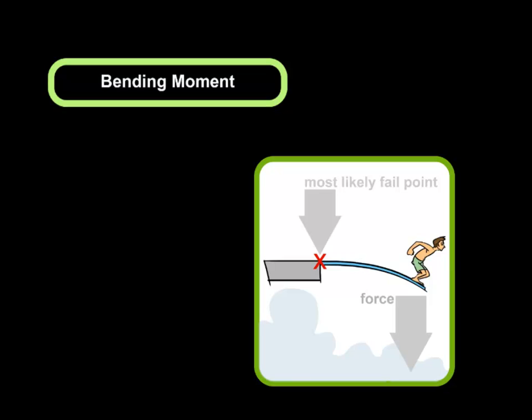Here we have an image showing what might happen if you bounced on a diving board with too much force. We would expect a board to fail somewhere near the pivot point. A crane works very similarly—too much force on the end might cause the crane to buckle as well.